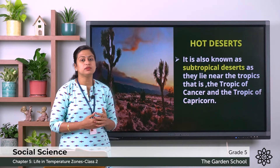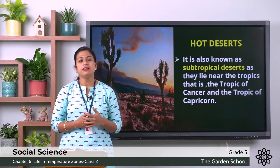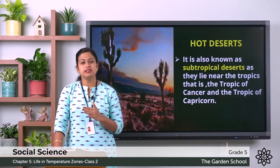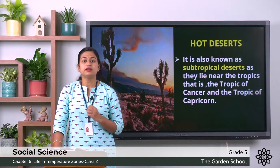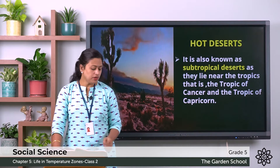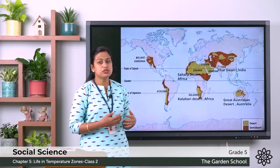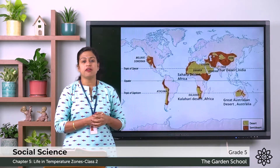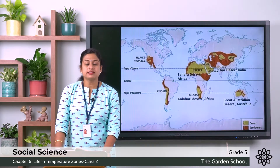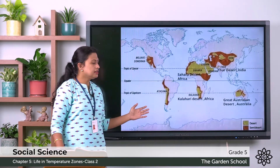These deserts are also known as subtropical deserts because they lie near the tropics, that is the Tropic of Cancer and Tropic of Capricorn. This zone experiences extreme climate with day temperature reaching as high as 54 degree Celsius and it also receives very less rain throughout the year. On the world map you can see the names of a few deserts: the Sahara Desert, which is known as the world's largest desert, situated in Africa; the Kalahari Desert in Africa; the Thar Desert in India and Pakistan; and the Great Australian Desert in Australia.